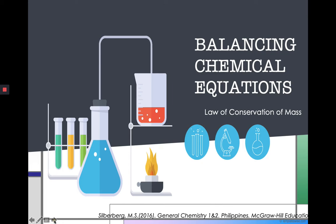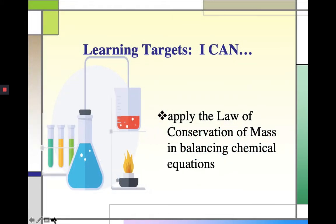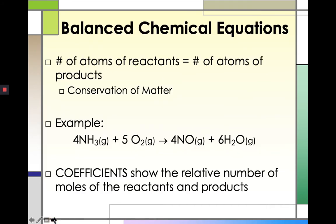So in this video, we will be applying the law of conservation of mass in balancing chemical equations, and we'll deal with a few examples. When you say balanced chemical equations, the number of atoms in the reactant side must be equal to the number of atoms in the product side.